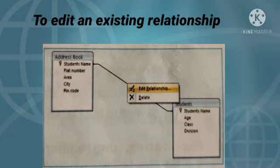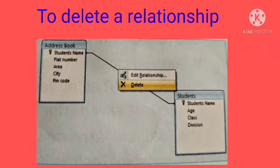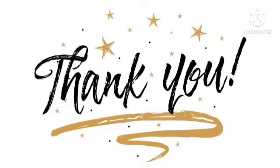To delete a relationship, close all the table windows. You cannot delete relationships between open tables. On the Database Tools tab, in the Relationships group, click Relationships. On the Design tab, in the Relationships group, click All Relationships. Click the relationship line for the relationship that you want to delete and press the Delete key.